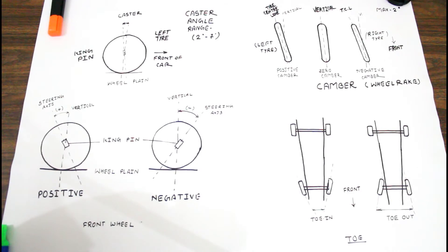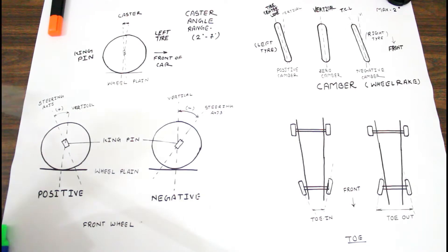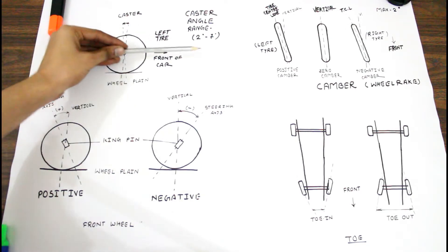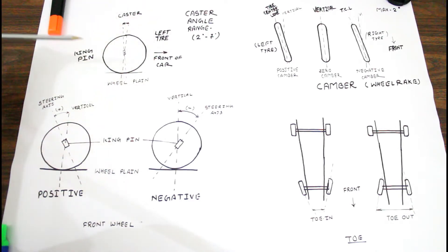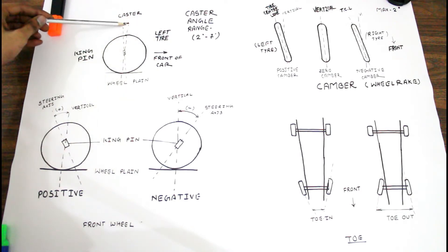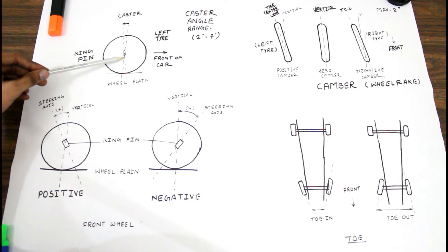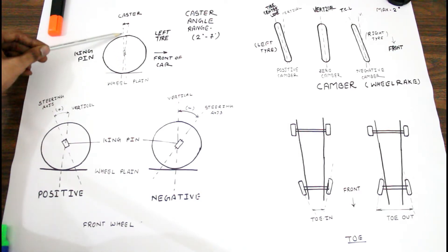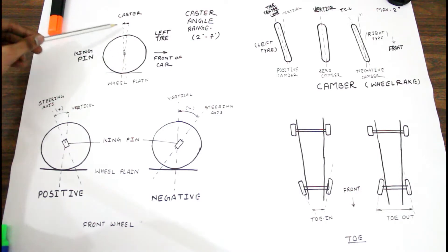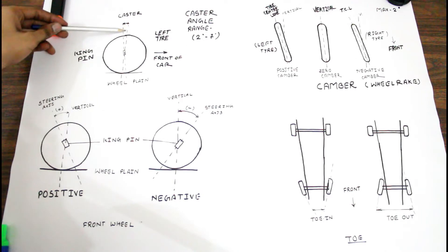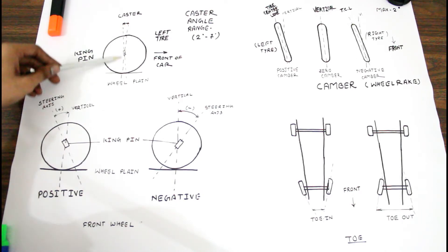Caster can be seen from the side of the vehicle. If we take the left tyre of the front axle, the vertical axis of the tyre and the kingpin centre line — also called the steering axis — are the two references. Caster is calculated as the angle between the vertical line of the tyre and the steering axis.